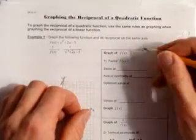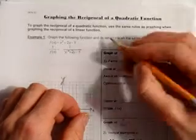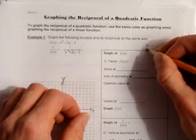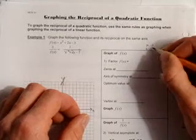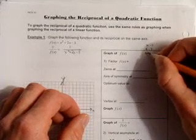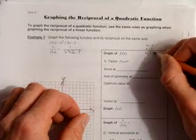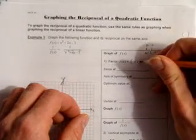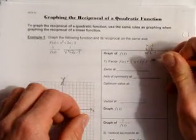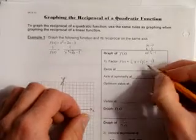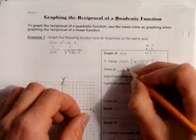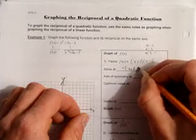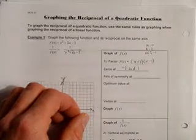Let's first factor f(x). We're trying to find what multiplies to negative 3 and adds to positive 2. The numbers are 3 and negative 1. So the original equation factors into (x + 3)(x - 1). We've been doing this long enough, we should be able to see that means the zeros are at negative 3 and 1.